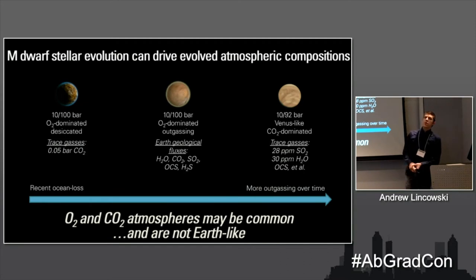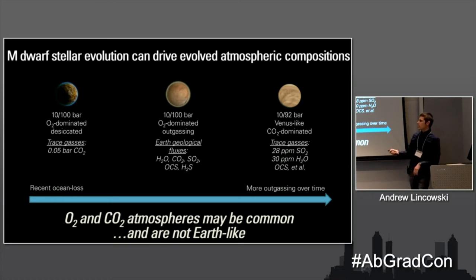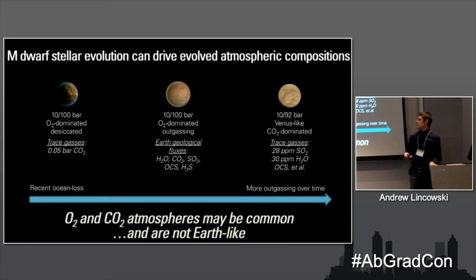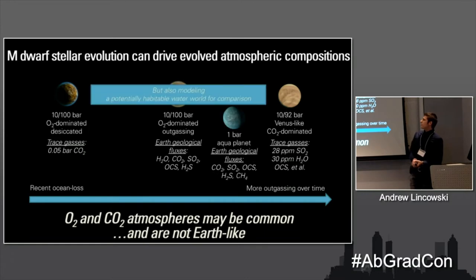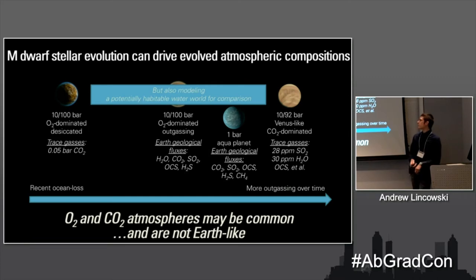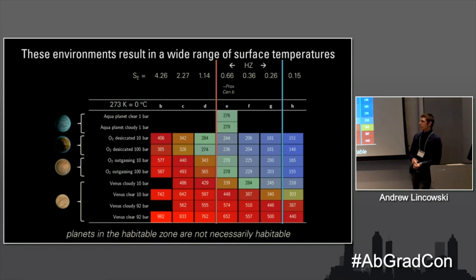I'm mostly modeling thick evolved atmospheres — atmospheres that have evolved from primordial composition. This spans from a recent ocean-loss scenario where you're left with mostly oxygen after the pre-main sequence phase, to cases where the planet wasn't totally desiccated from its interior and has outgassing like Earth, Venus, or Io, adding volcanic constituents. Then all the way to the Venus-like end of the spectrum with a runaway greenhouse. Since this is an astrobiology conference, I'm also considering what an Earth-like aqua planet might look like.